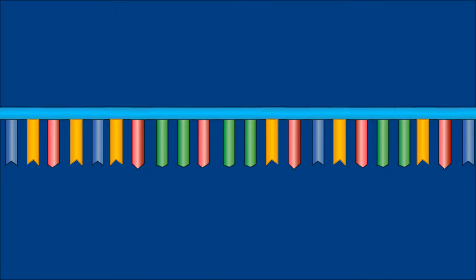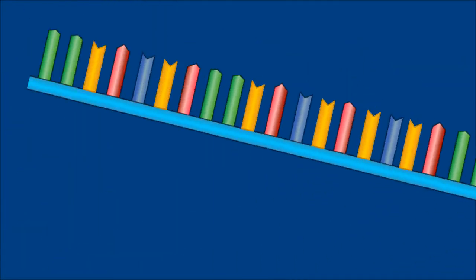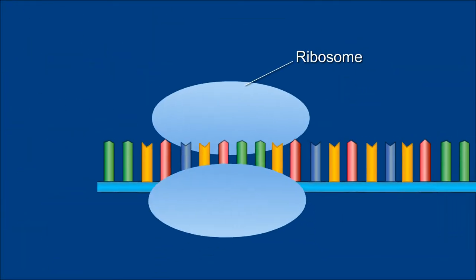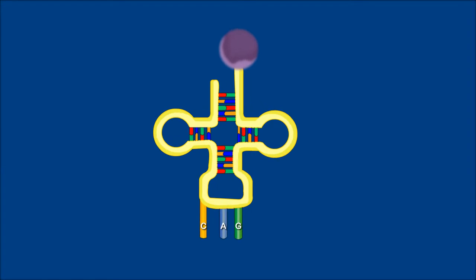The mRNA is processed and then it moves out of the nucleus, where ribosomes, which are called protein factories, attach to the mRNA. The ribosome reads the three-letter code comprising of three bases in the mRNA to attach amino acids to form a chain.